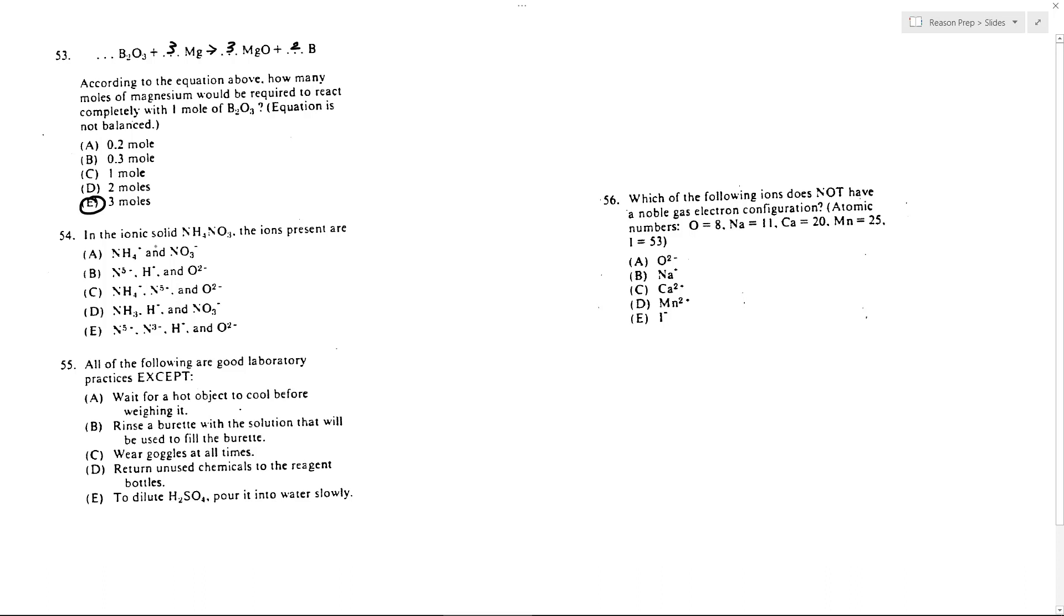Problem 54. In this solid, what are the ions? We just know that these break into the polyatomic ions of ammonium, NH4+, and nitrate, NO3-, so know your polyatomics. And so 54 is A.